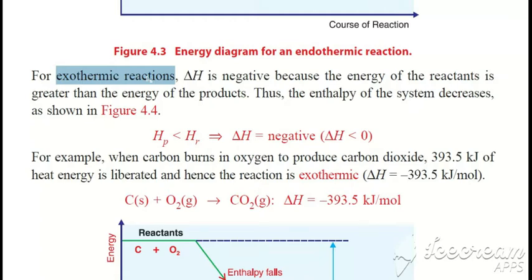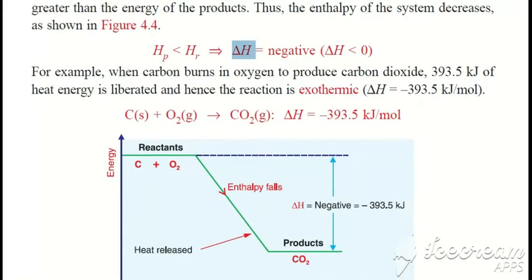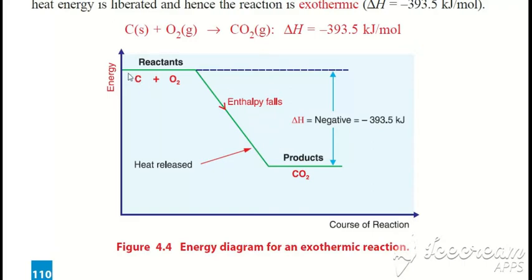For exothermic reactions, heat is released. The energy of the reactants is greater than the energy of the products, so the change in enthalpy is negative. For example, when carbon burns in oxygen, carbon dioxide is formed and 393.5 kilojoules of heat energy is liberated, making it an exothermic process.